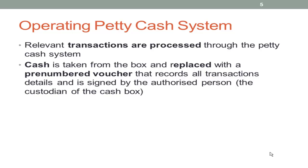The relevant transactions are processed through the Petty Cash system. When someone delivers a parcel and needs $12.50 paid for freight, the cash is taken from the box and given to the person. In the Petty Cash box, the cash is replaced with a pre-numbered voucher — these are often in duplicate so a copy stays in the voucher book. You'd record the amount ($12.50), the account (freight), and any relevant comments such as 'receiving of a parcel', signed by the authorized person.